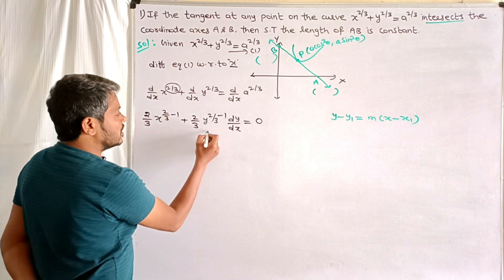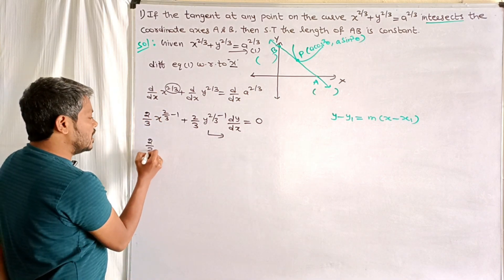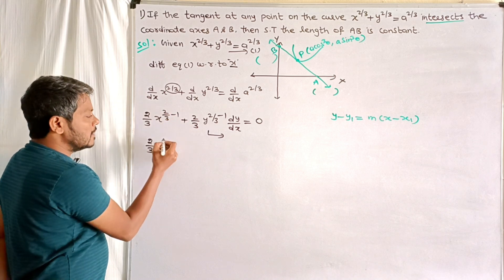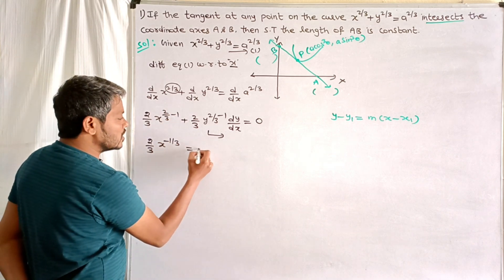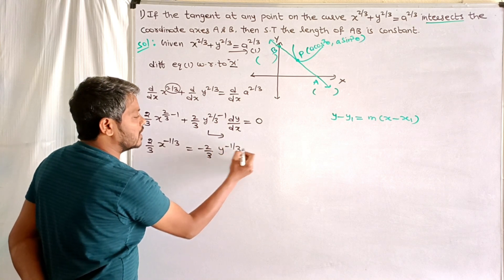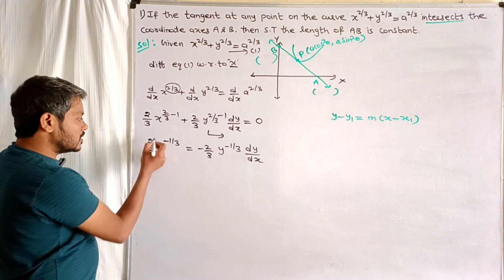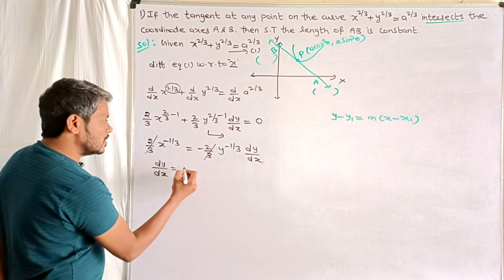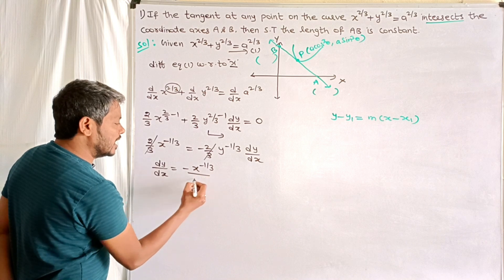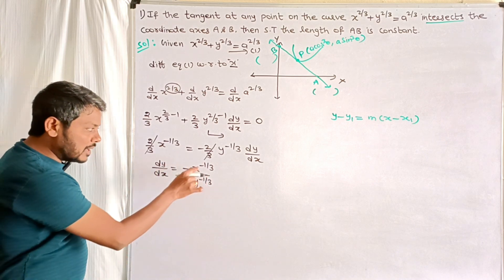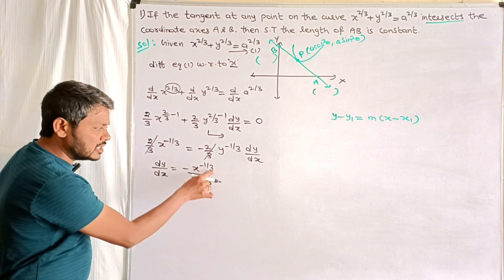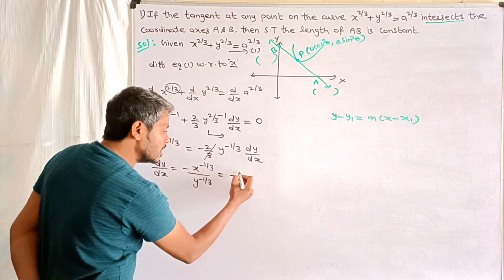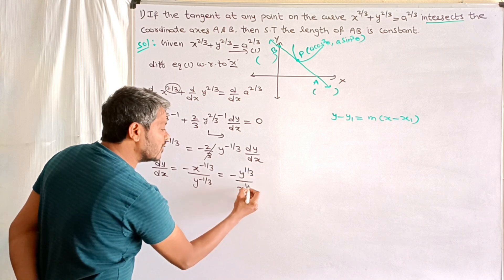Rearranging: (2/3)x^(-1/3) = -(2/3)y^(-1/3)·(dy/dx). The 2/3 cancels on both sides. Therefore dy/dx = -x^(-1/3) / y^(-1/3). Since the powers are negative, we interchange numerator and denominator: dy/dx = -y^(1/3) / x^(1/3).